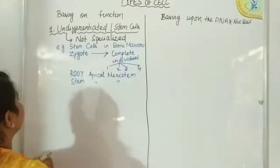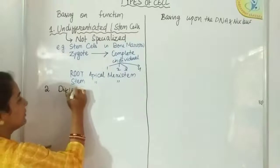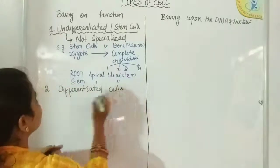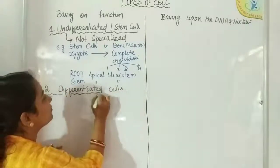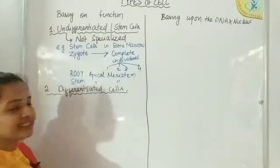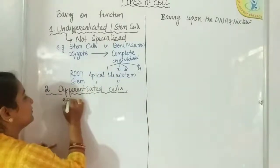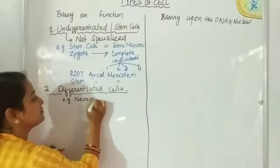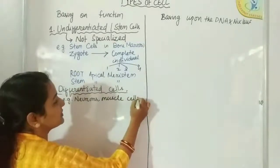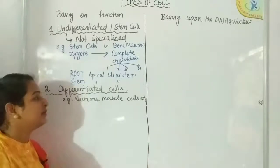Next, moving to the second type — differentiated cells. These are cells whose function is already distributed. Those cells perform only a specific type of function; other than that, they cannot perform any other type of function. Those are differentiated cells, or specialized cells. For example: neurons, muscle cells, epithelial cells, etc. They are specialized cells performing a definite, specific type of function.